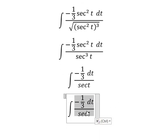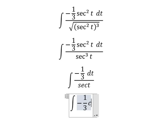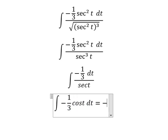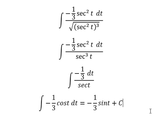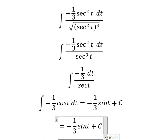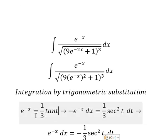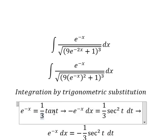This gives us negative 1 over 3 cos(t) dt. The integration of cos(t) gives us sin(t), and I will add the constant C.